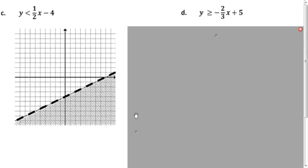In letter D, we're greater than or equal to negative 2 thirds X plus 5. So, we use a solid line because we include the points on the line in the solution set, and we shade above the line. This is greater than.